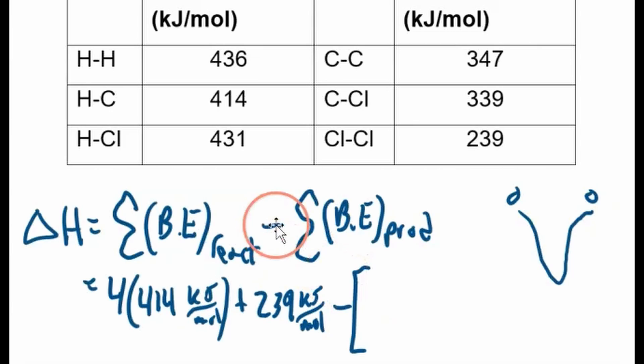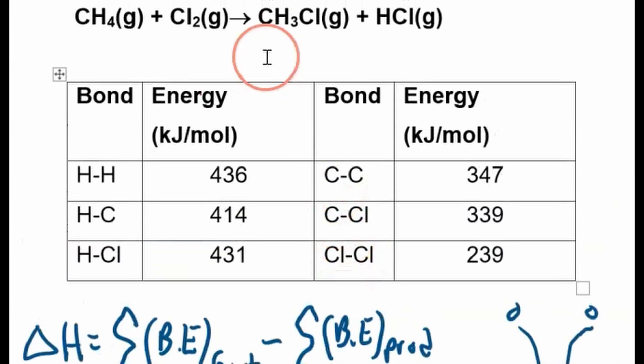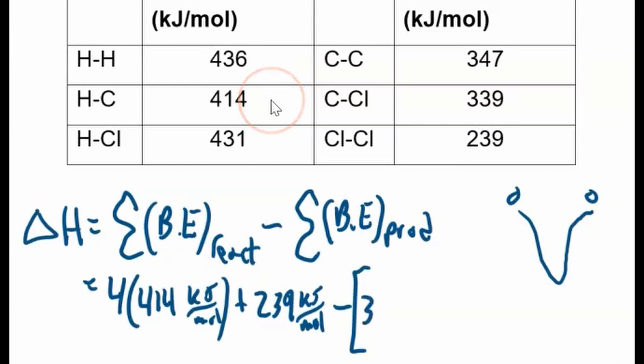Minus, now put a big bracket here. Always put a big bracket because you don't want to miss distributing this negative sign inside. Now, what bonds do we want to form? We want to form three C-H bonds. So three times each C-H bond has a bond energy of 414 kilojoules per mole.